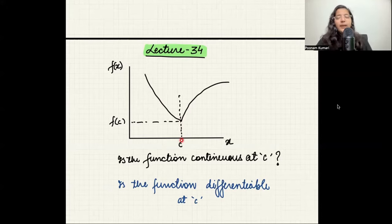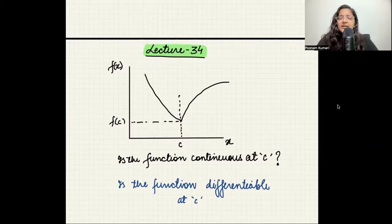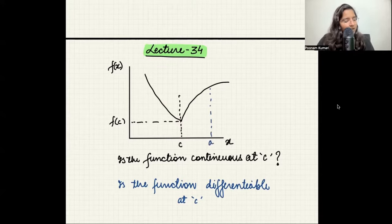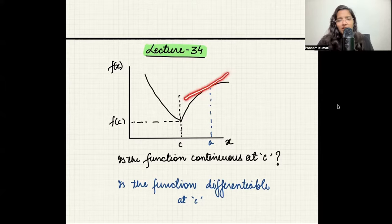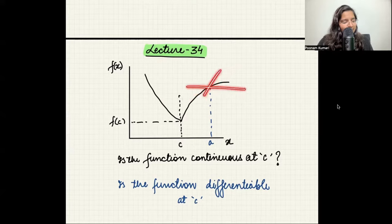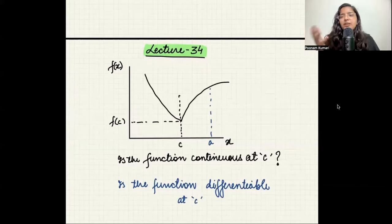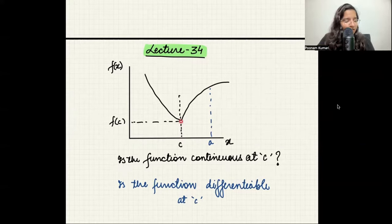To draw a tangent at point c — the tangent is something which just touches the curve and doesn't intersect it. At point A, there is only one possible tangent; you cannot make any other tangent in a different direction. But at point c, I can make a tangent like this, or like this — there are multiple possibilities to draw a tangent.